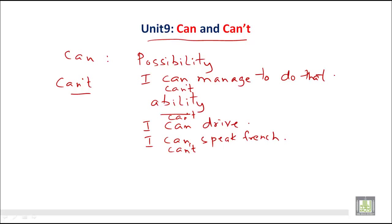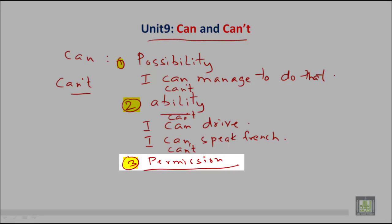Can we also use for asking and giving permission. We use can. This is the first use of can for possibility. Second, for ability. Third, we can say for permission.